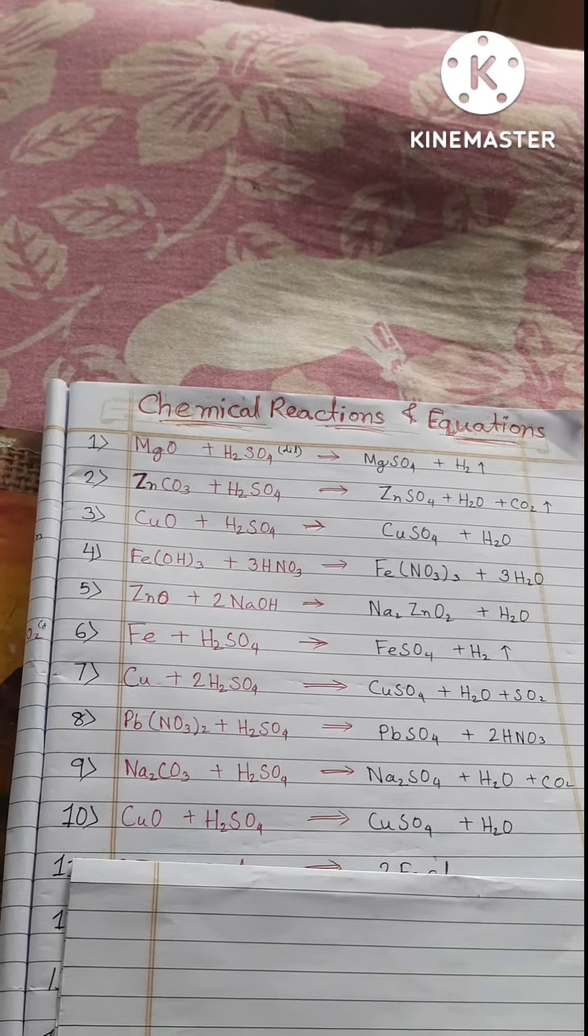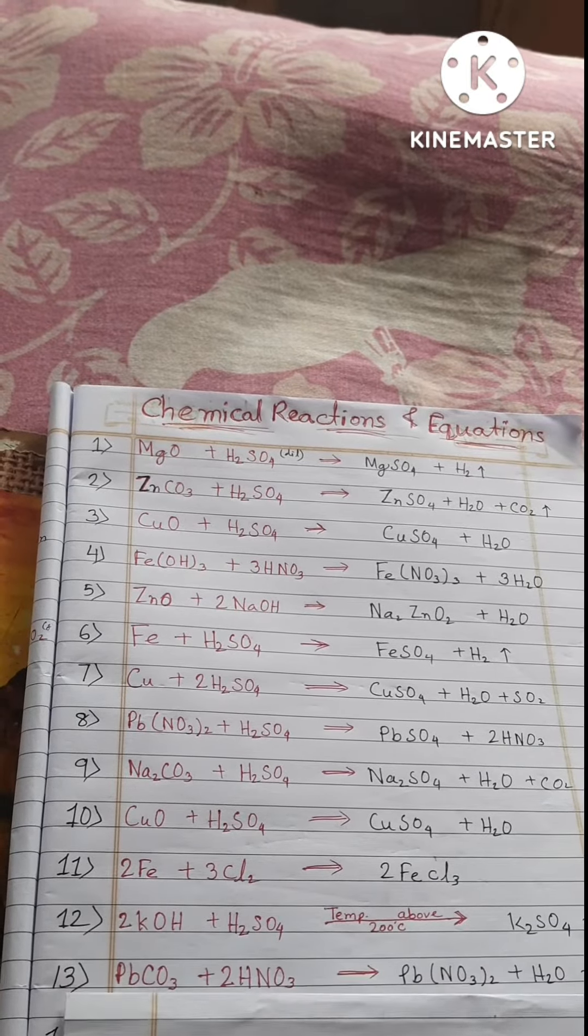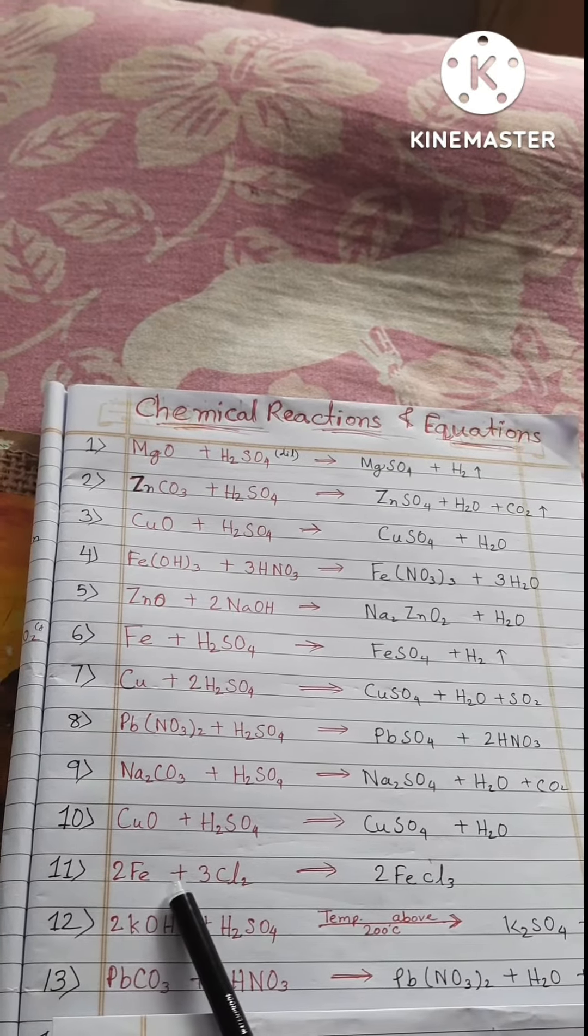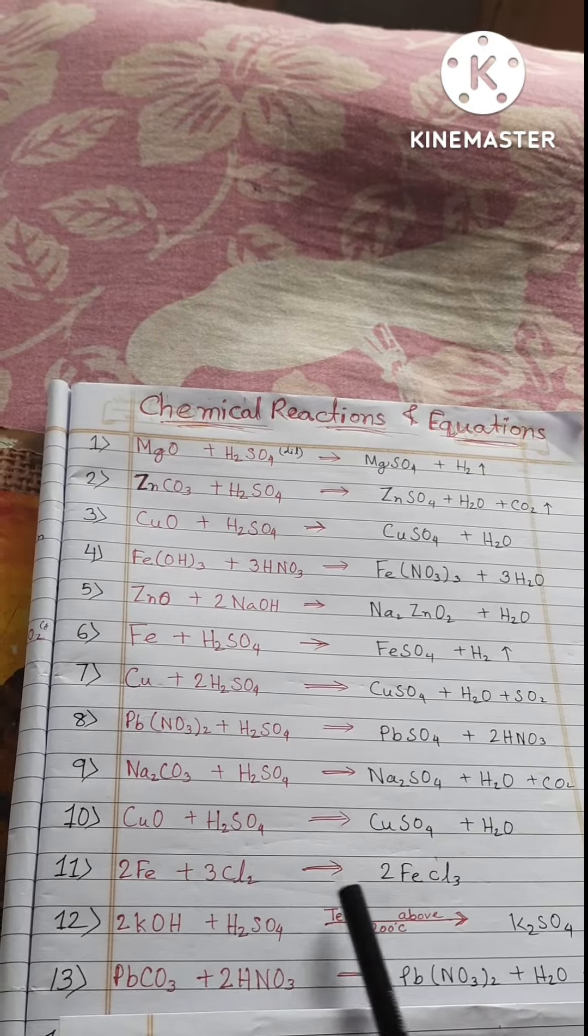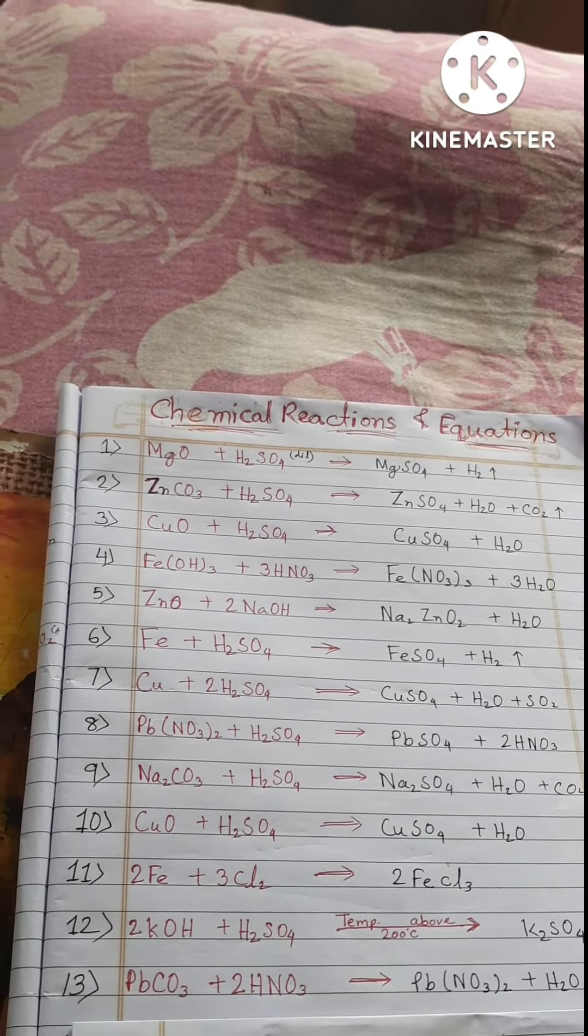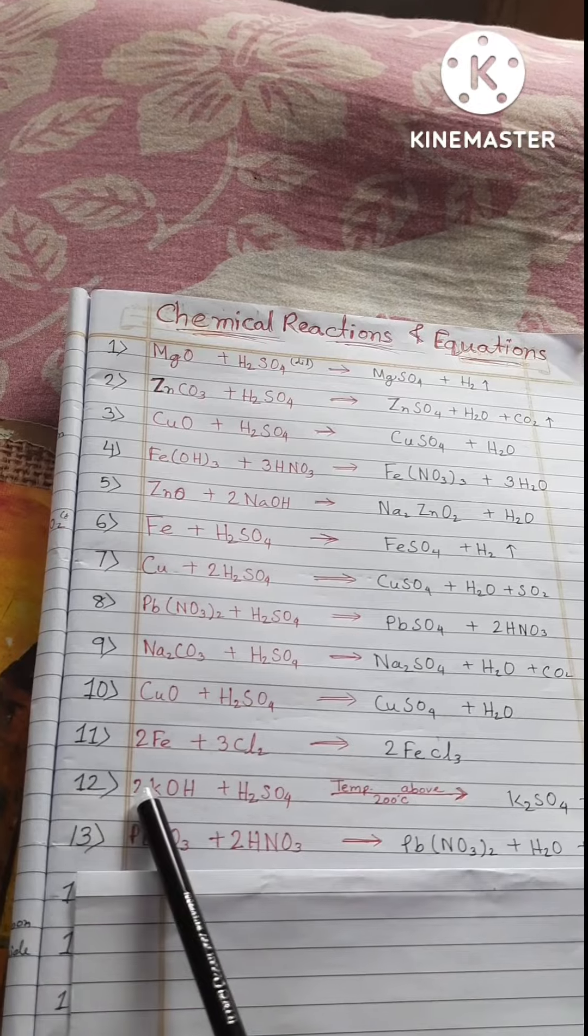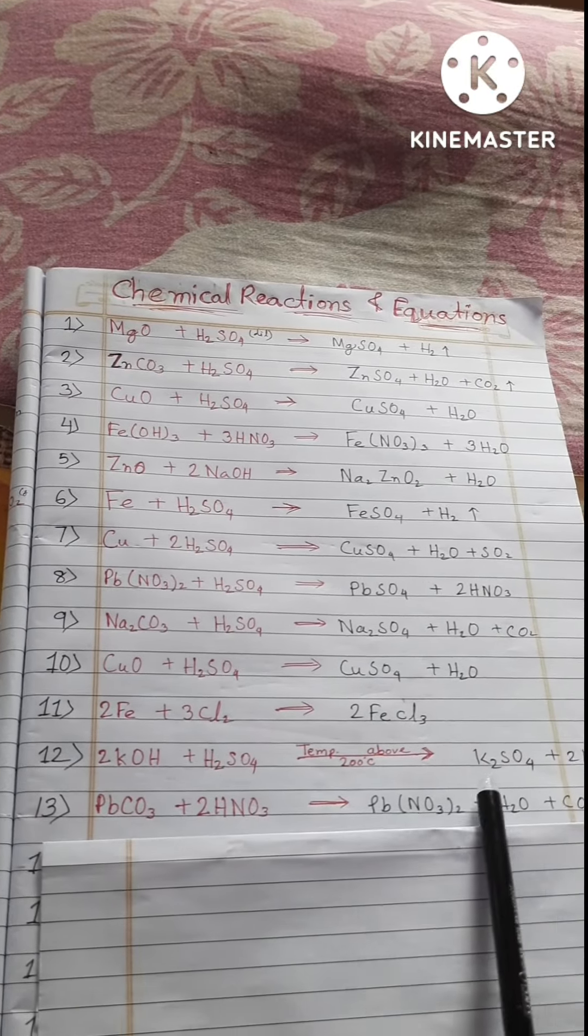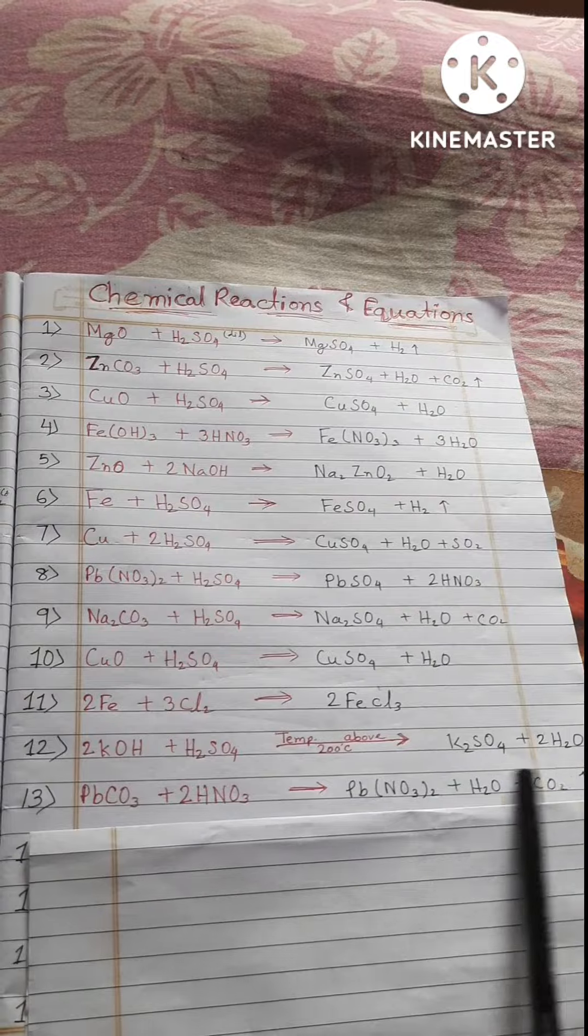CuO plus H2SO4 equals CuSO4 plus H2O. 2Fe plus 3Cl2 equals 2FeCl3. 2Fe plus H2SO4 equals 2FeO.